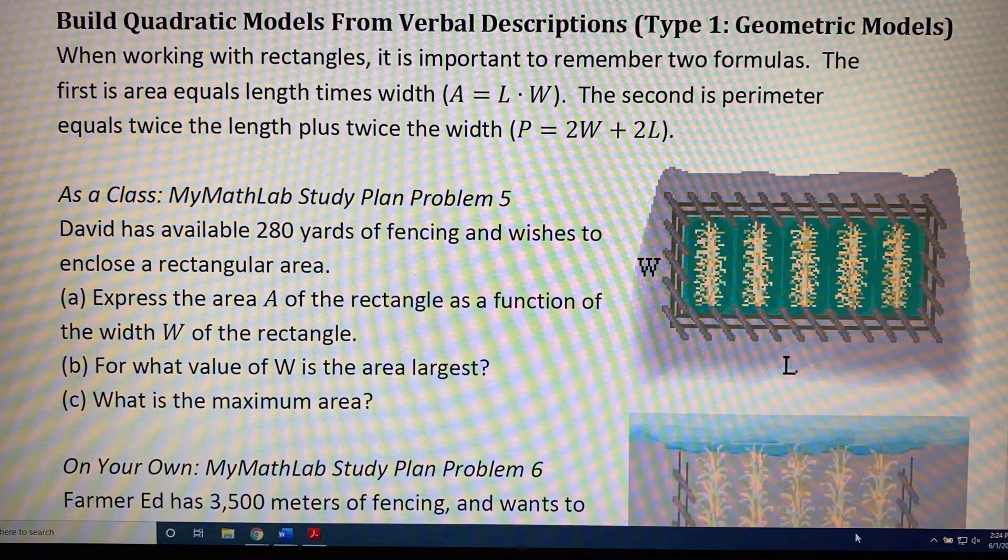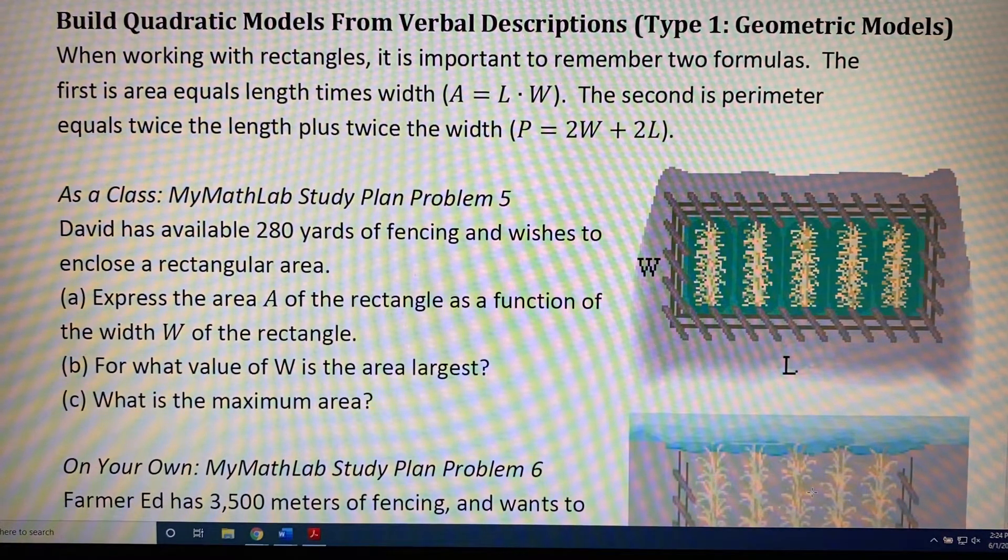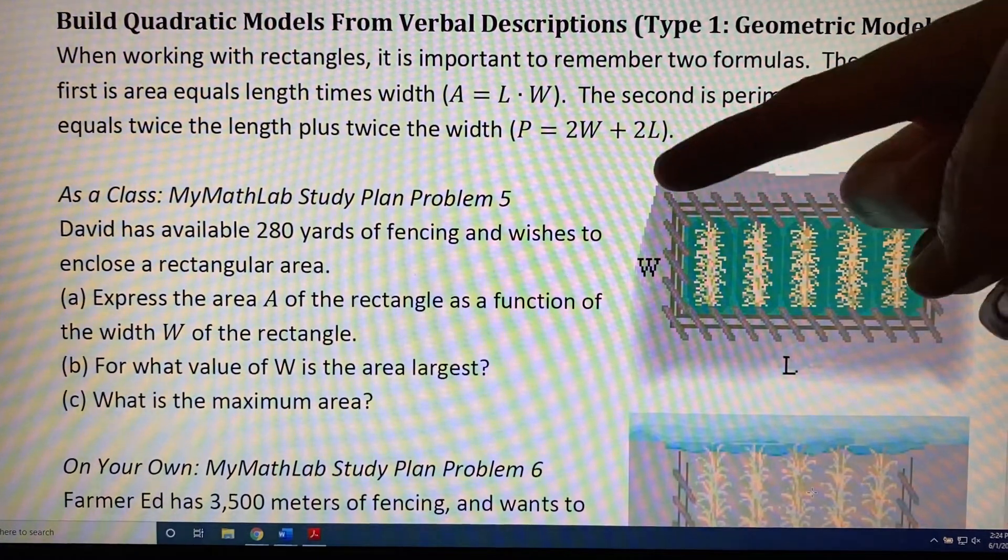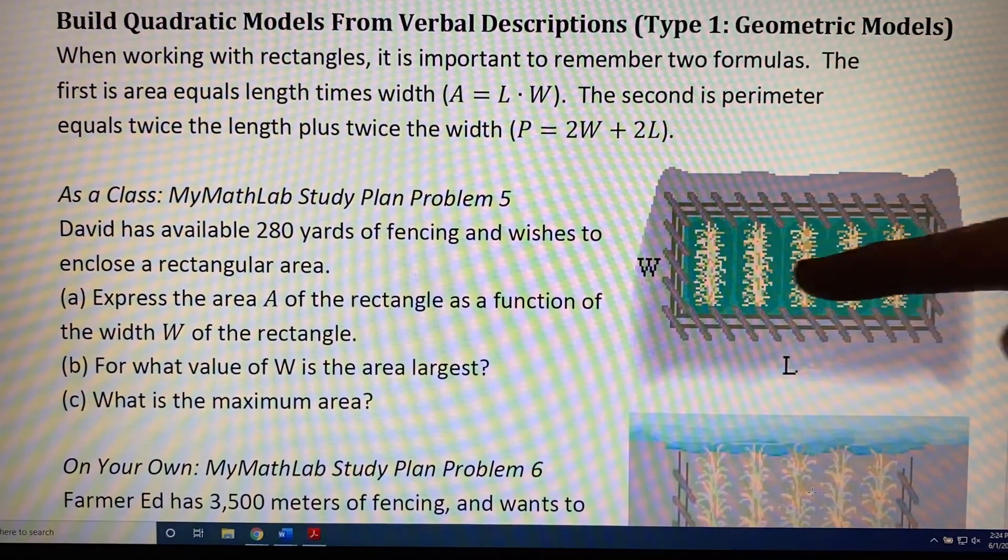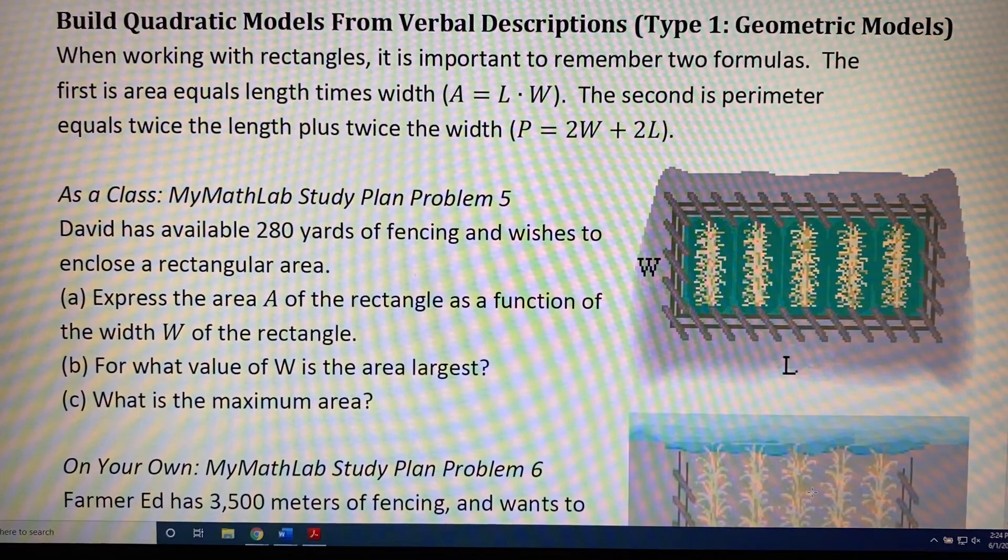We will look at two problems of this type. Let's read the first one. David has available 280 yards of fencing and wishes to enclose a rectangular area. We can see over here in this diagram the fencing that David has and the rectangular area that he wishes to fence in. It looks like perhaps there's corn or grain growing inside.